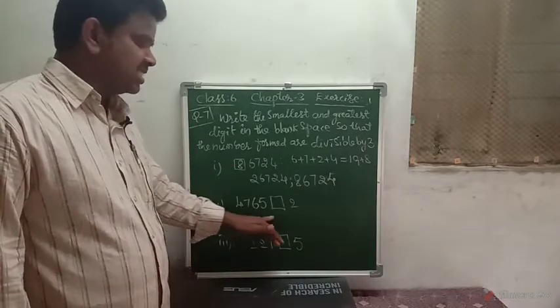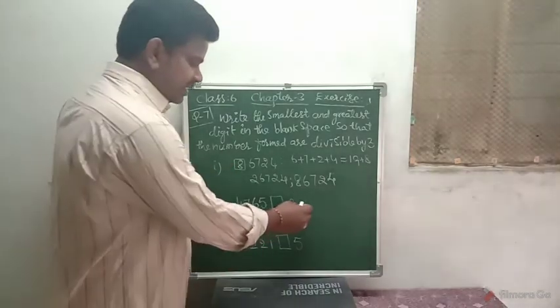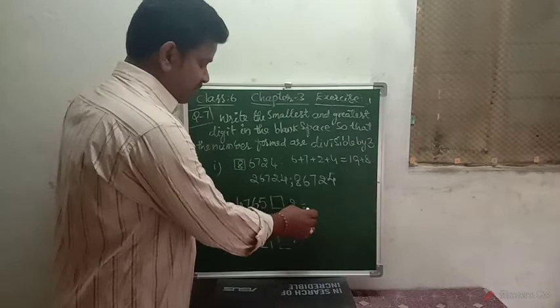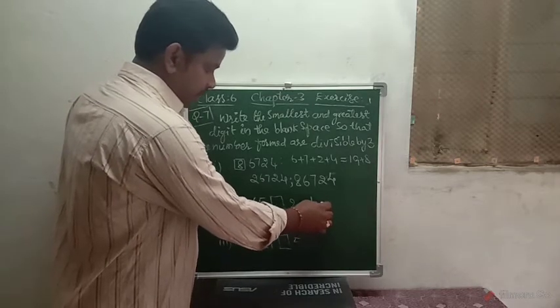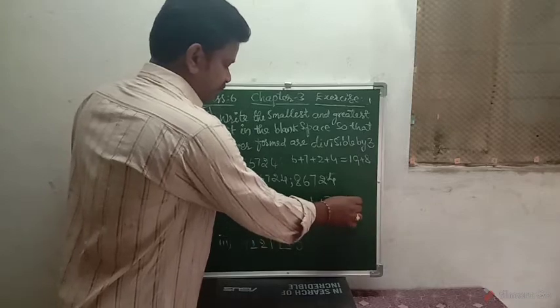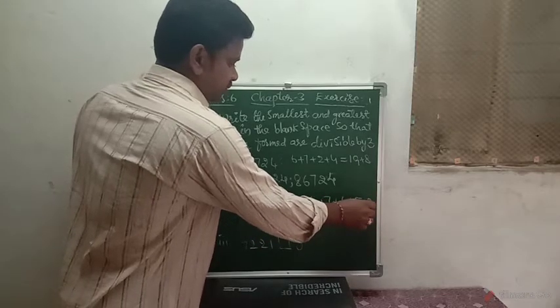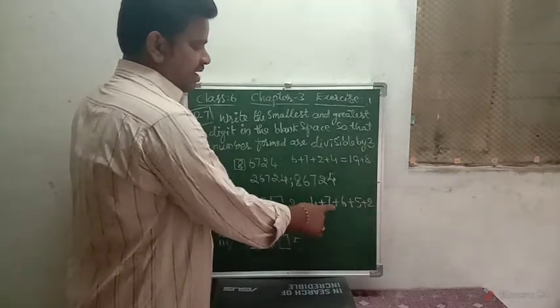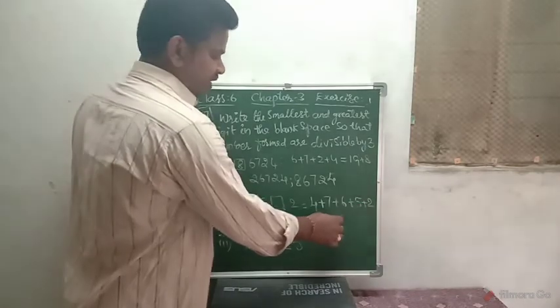We should apply the same method to the second one. Add the given digits, finding the sum of given digits. 4 plus 7 plus 6 plus 5 plus 2. 4 plus 7 is 11, plus 6 is 17, plus 5 is 22, plus 2 is 24.